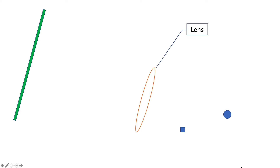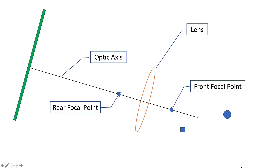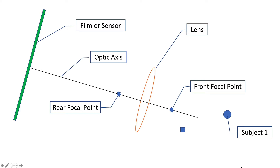Let's look at the situation where we have a very simple camera consisting of an idealized lens. Any lens will have an optic axis, a rear focal point, and a front focal point — the locations where light entering the lens parallel to the optic axis will be focused. There will also be film or a sensor in the camera, and we want to photograph subject 1 and subject 2.